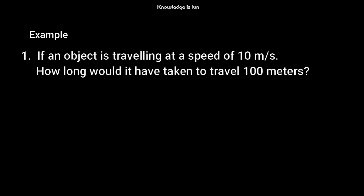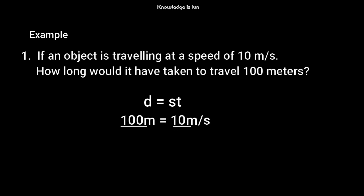From the formula, distance equals speed times time, or speed equals distance over time. Here the distance is 100 meters and the speed is 10 meters per second. You substitute the values into the formula, divide both sides by 10, and you get the time.